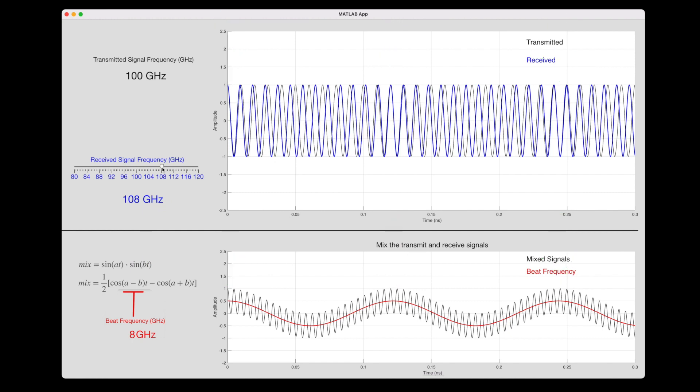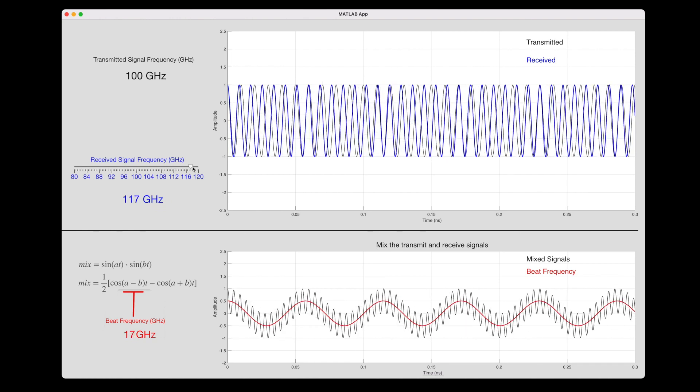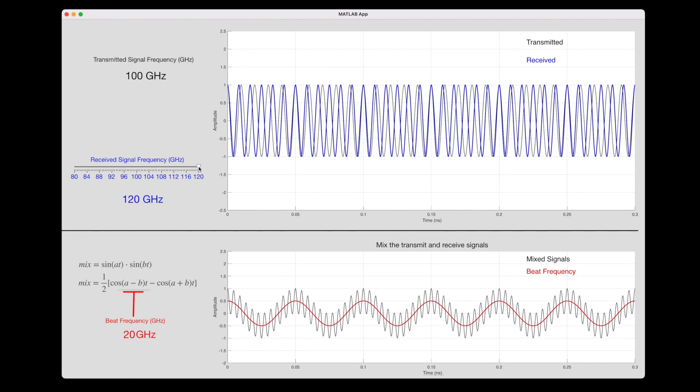To find this frequency, we can mix these two signals together by multiplying them, and we get this resulting waveform. Multiplying two sinusoids produces a signal that is composed of two new sinusoids. There's this high frequency component, which comes from adding the transmit and receive frequencies together, and this low frequency component that comes from subtracting them, which produces the beat frequency. As I increase the received signal frequency, you can see that the beat frequency increases as well. Therefore, by looking at the much slower beat frequency, we can determine the radial velocity of the object.